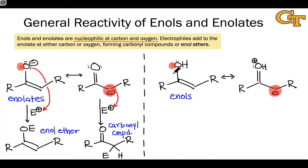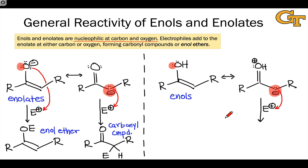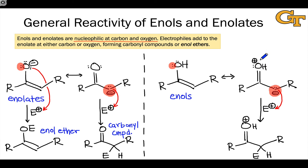Analogously, enols can react as nucleophiles either at oxygen or at carbon, but because enols are very commonly generated under equilibrium conditions, reactions at carbon are much more common. Using the resonance structure on the right, the electron flow is exactly analogous to the nucleophilic reactivity of the enolate — the only difference is that we have a positively charged oxygen where we had a neutral oxygen in the enolate. The product looks like the substituted carbonyl compound generated from the alpha carbon of the enolate, but now we have positive charge on the carbonyl oxygen, giving us a protonated carbonyl.